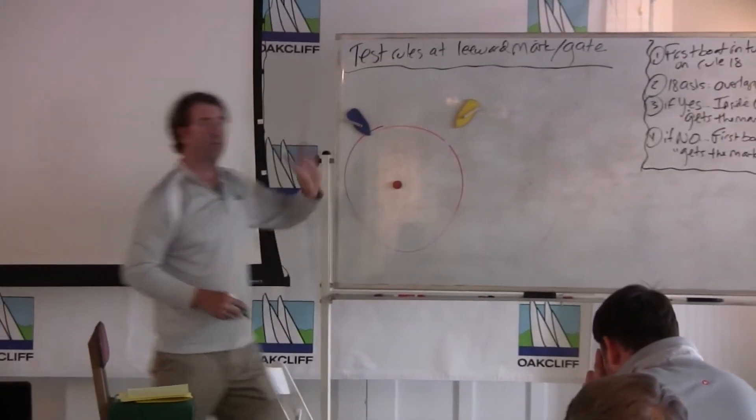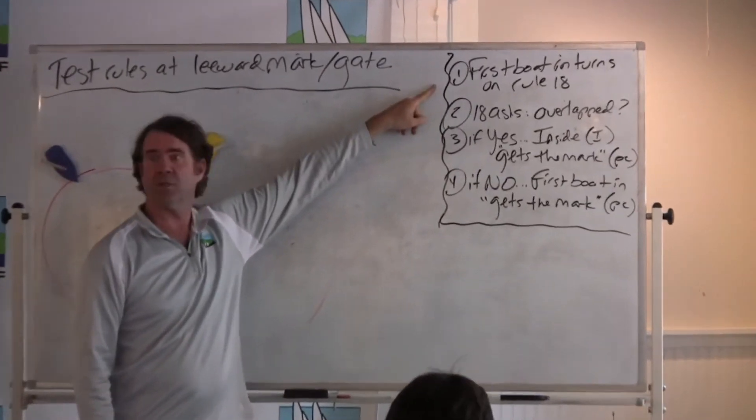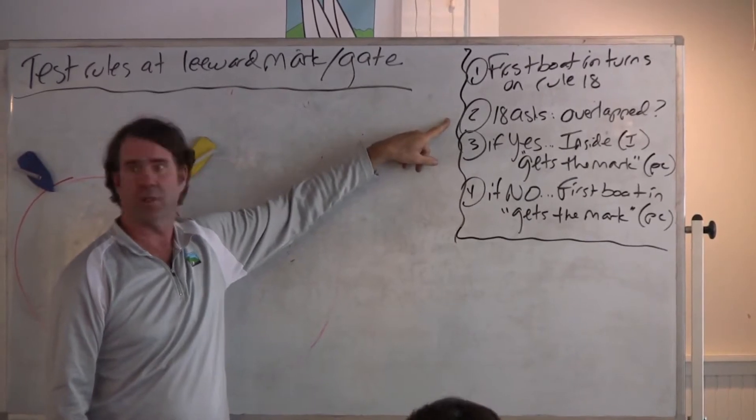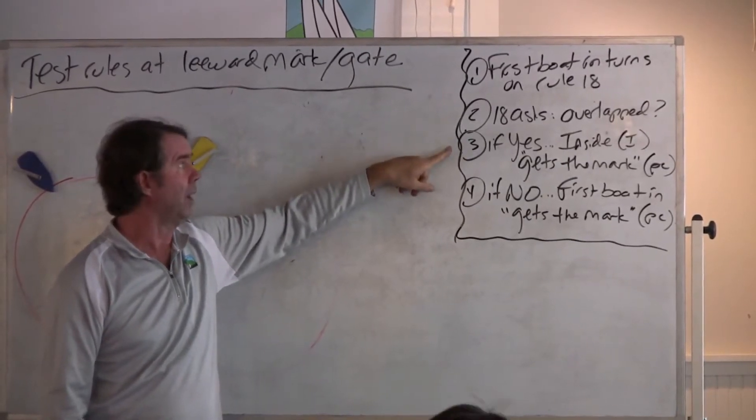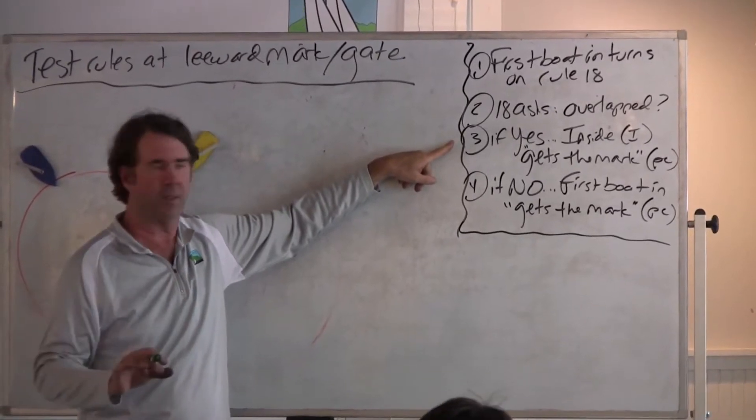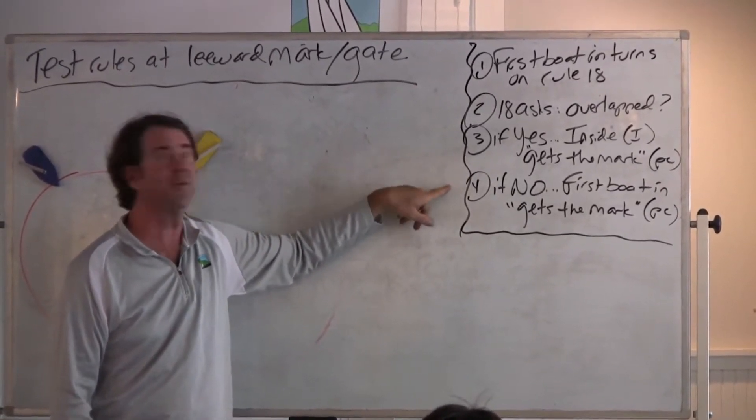Alright, so as a reminder, how rule 18 works. The first boat in turns on rule 18, doesn't matter who's in. Rule 18 asks the question, are the boats overlapped? If they are, then the inside boat gets the mark. She gets to sail her proper course around the mark, including tacking or jibing. If the answer is no, they're not overlapped, then the first boat in gets the mark.